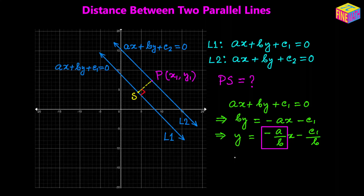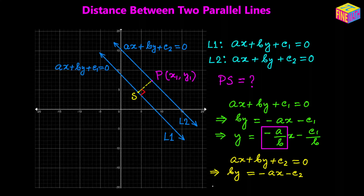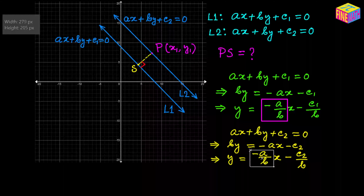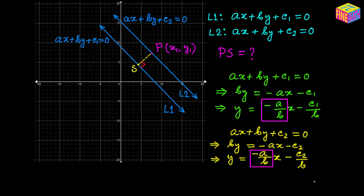Let's also find the slope of the second equation. From ax + by + c₂ = 0, we get by = −ax − c₂, so y = −(a/b)x − c₂/b. The slope of this line is also −a/b. So the two equations we assumed for the two parallel lines are valid because they both have the same slope, and that's exactly what we need for two parallel lines. We have assumed the correct form of equation.